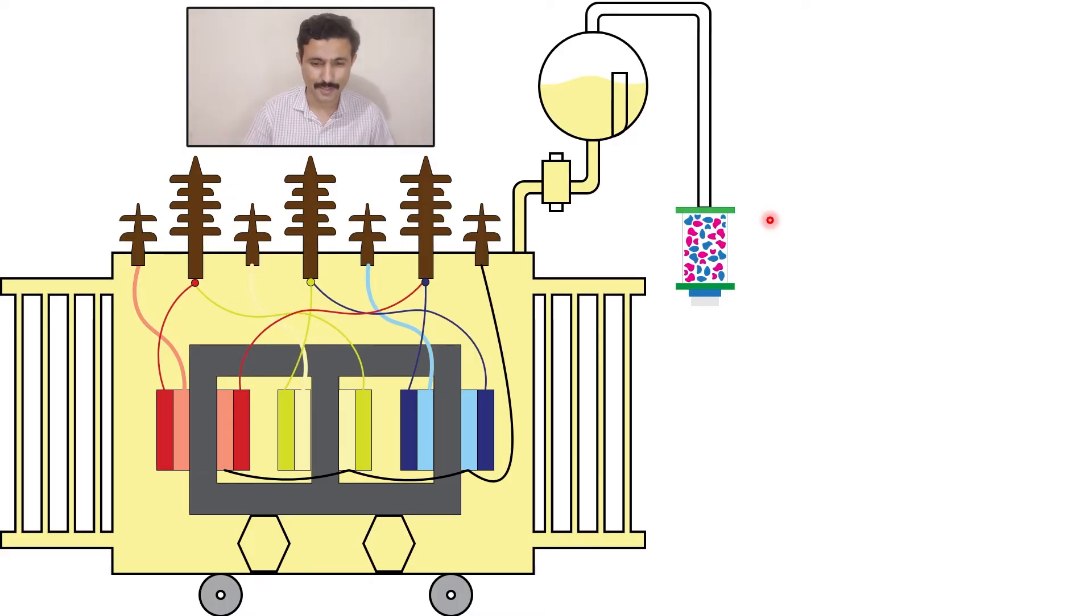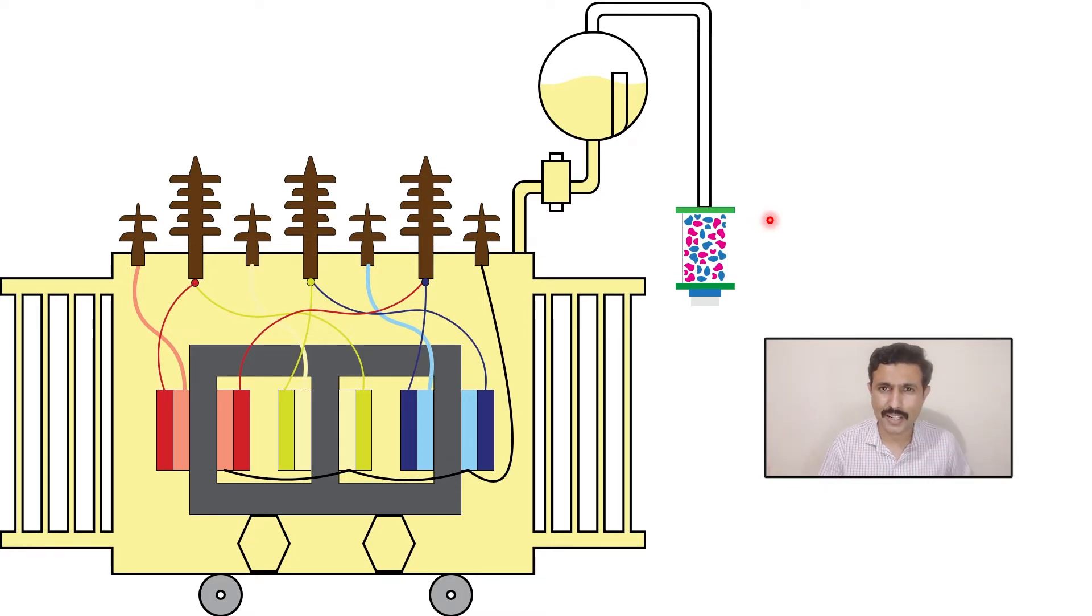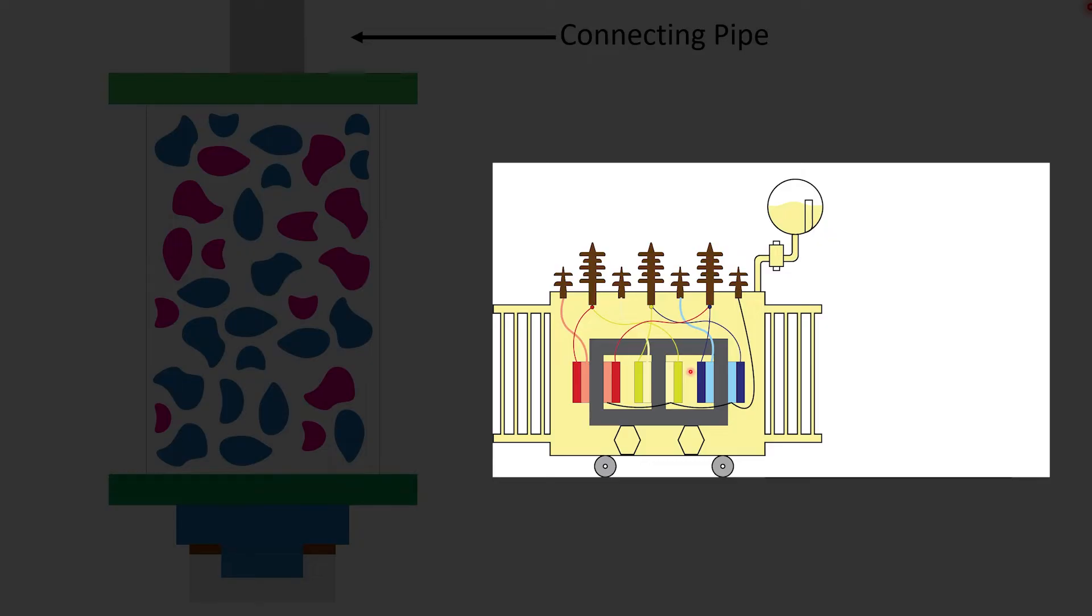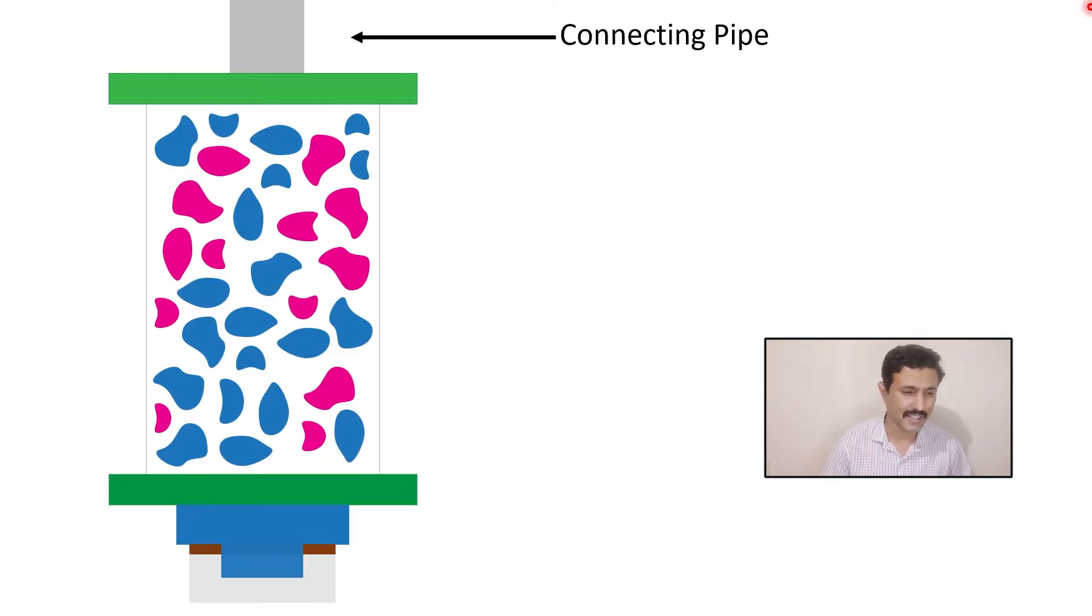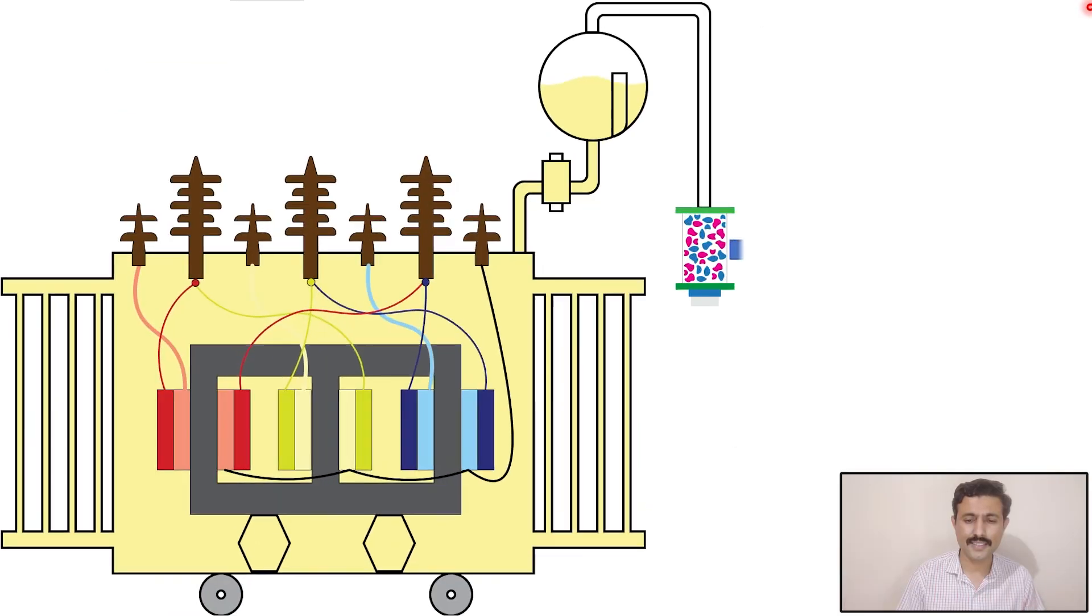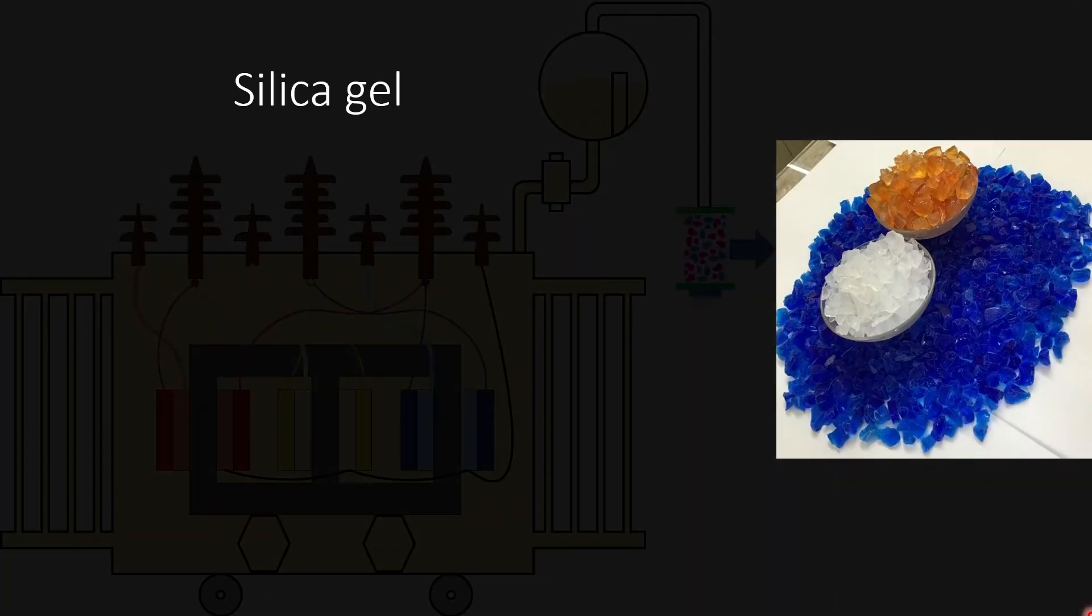This breather plays the role of hero when we are tackling the moisture. Now let's deep dive into the breather. This is the breather. This is the connecting pipe through which the breather is connected with the conservator tank. There are top lid and bottom lid, and in between these two there is a transparent cylinder. In this transparent cylinder, silica gel is filled. This is the real image of silica gel.